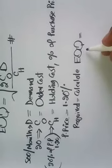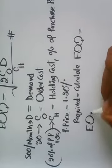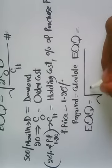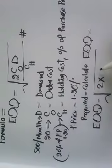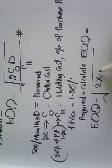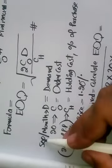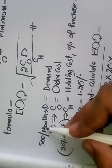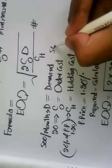So we have EOQ is equal to root 2 into C not. C not ordering cost is equal to 20 into D demand. So 500 units are required for one month, so 500 into 12.